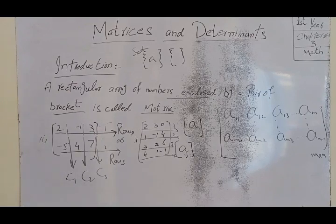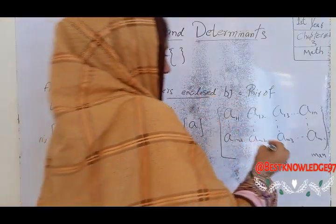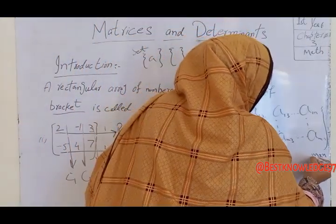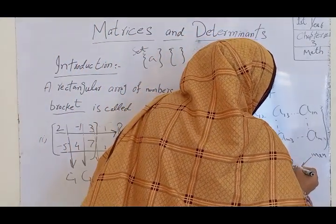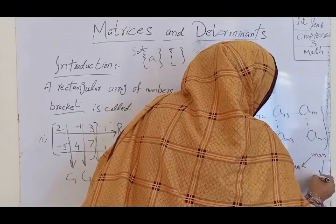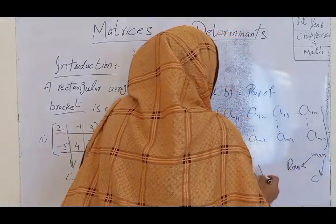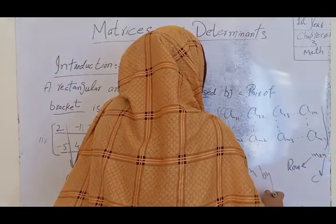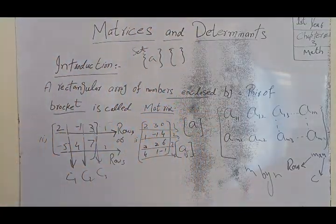We write the rows first and then the columns. As shown here, these are the rows and these are the columns. We write the order as M by N.